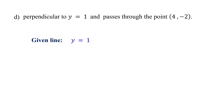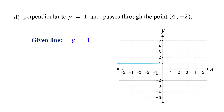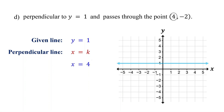In this example, the given line is y equals 1. It represents a horizontal line crossing the y-axis at 1. A perpendicular line must be vertical, written as x equals k, where k is the x-coordinate of the given point. Here, the x-coordinate of the given point is 4, so k is 4. Therefore, the equation of the perpendicular line is x equals 4. If you graph this, the line crosses the x-axis at 4, passes through the given point (4, negative 2), and is perpendicular to the given line. In general, if the given line is in the form y equals a constant, the perpendicular line is x equals the x-coordinate of the given point.